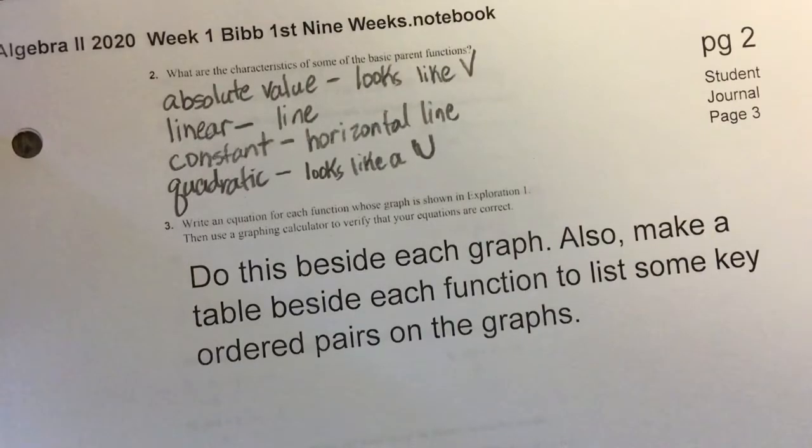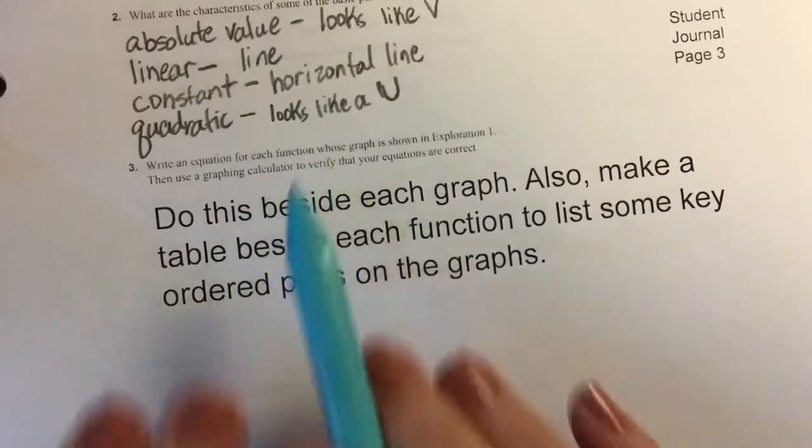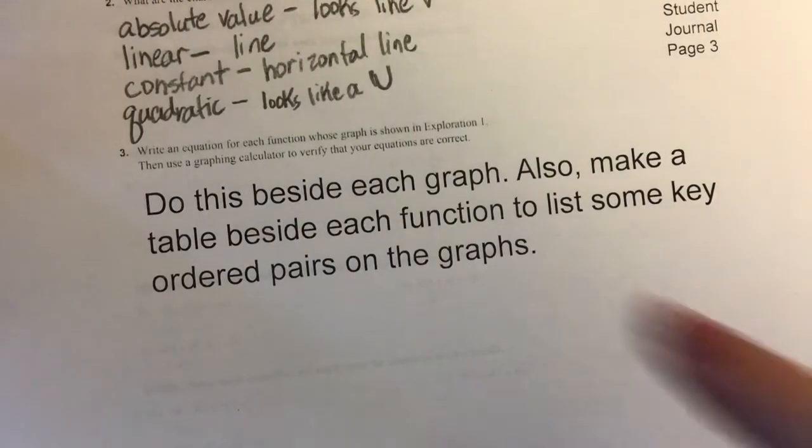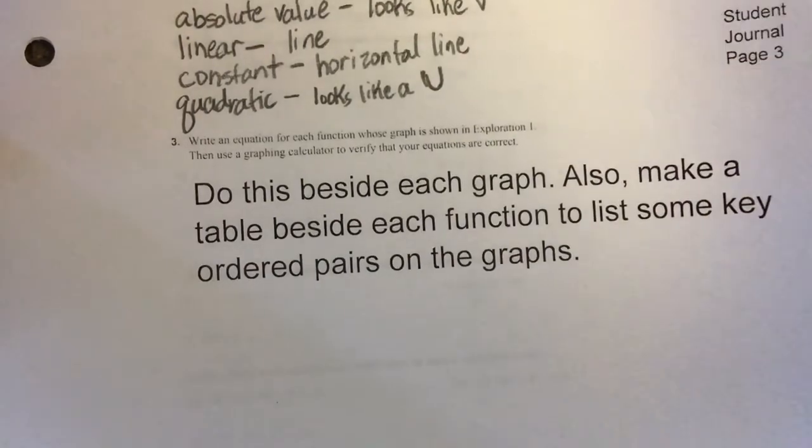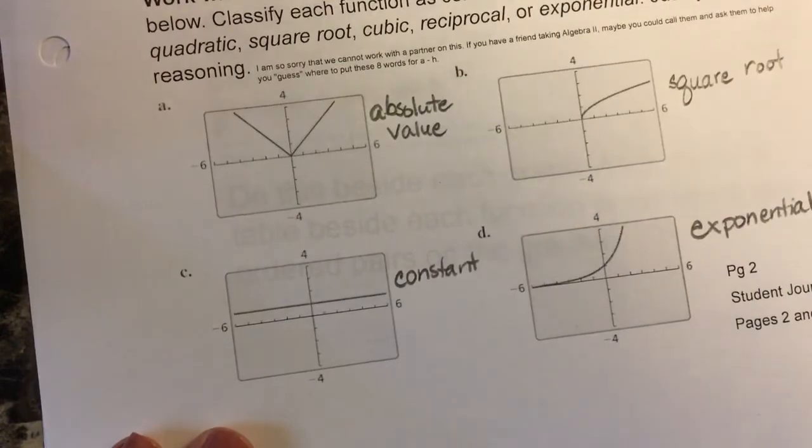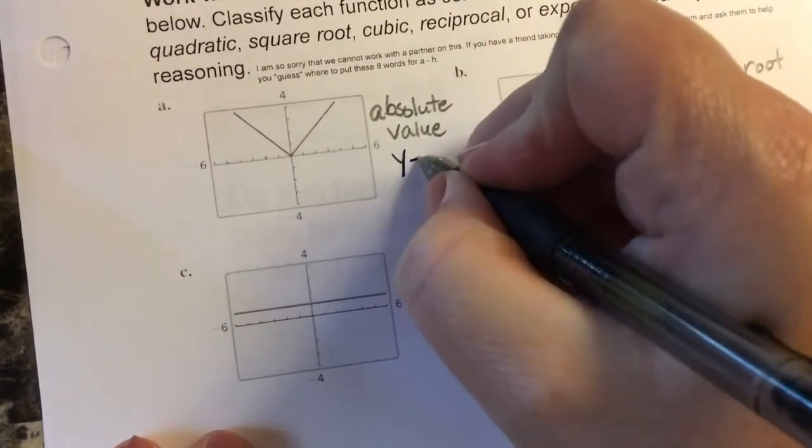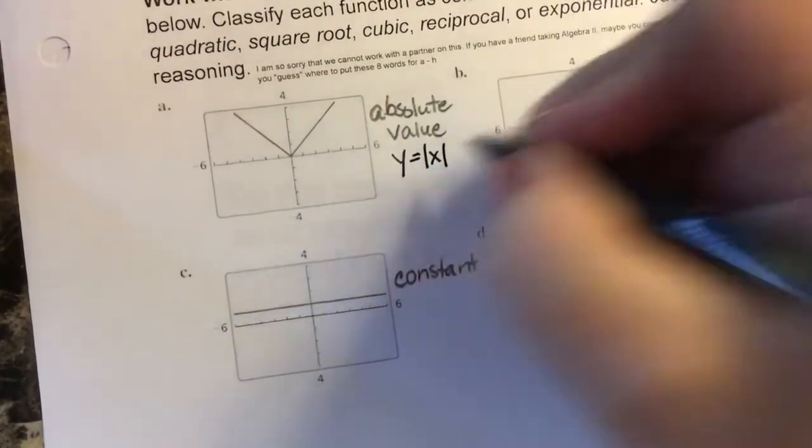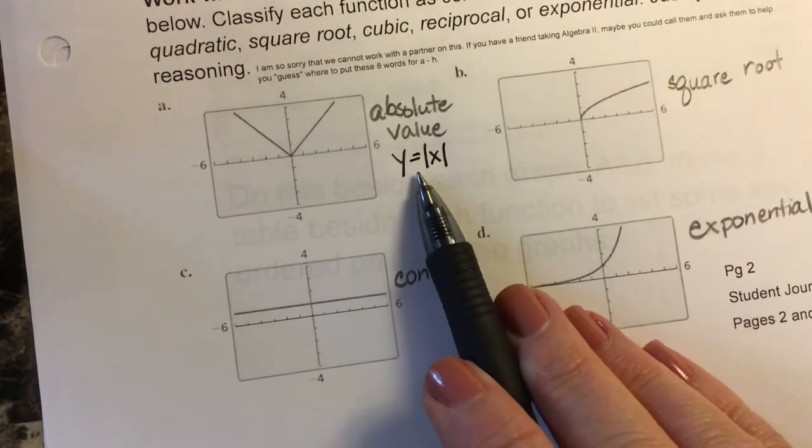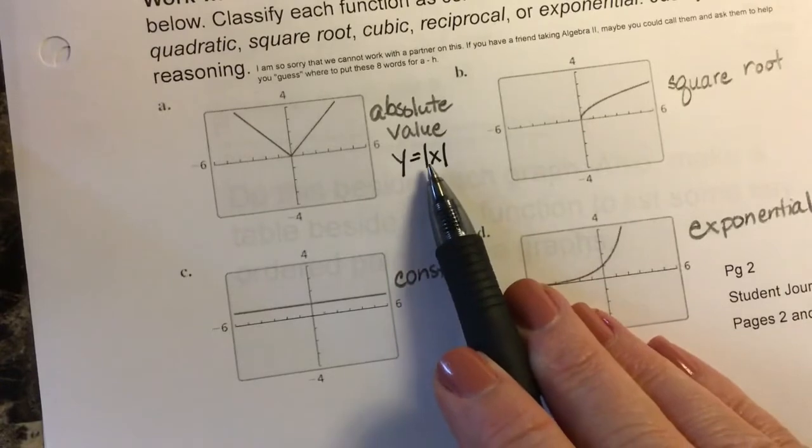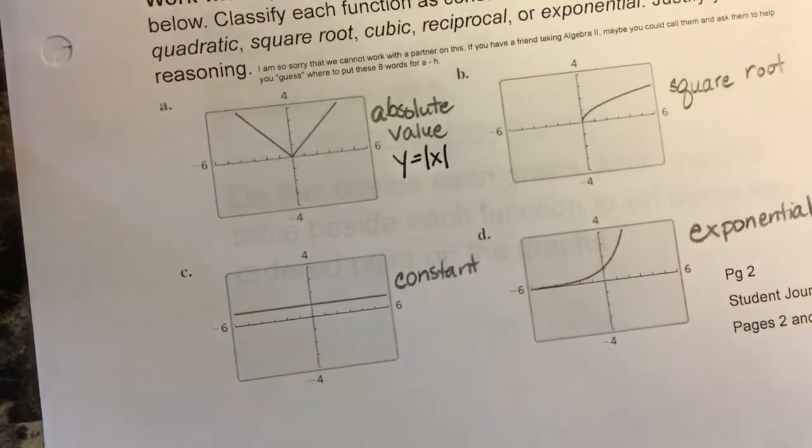For number three we're going to write an equation for each function and we're going to make a table of values for each of those functions so that when you're asked to graph you'll have this table of values that you can use to graph the parent function. The reason why it's called a parent function is because it's like your starting function. If you want to graph any absolute value, then the starting equation for a parent function is y equals the absolute value of x. When you have your equation, you'll be asked to recognize an equation. When you see those two vertical bars that means you have absolute value.